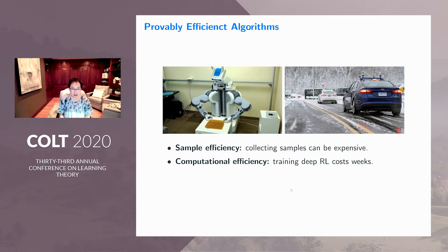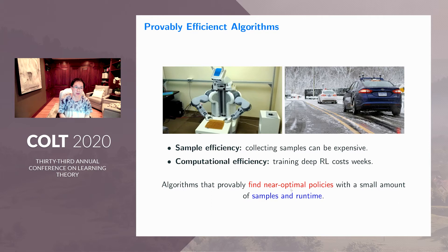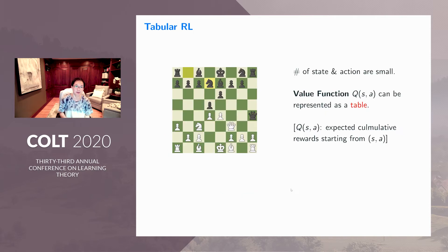The second is computational efficiency. We typically know when training reinforcement learning models, we usually use deep neural networks. Training even small tasks usually costs weeks. So we also want our algorithm to be computationally efficient. We say an algorithm is provably efficient if it can provably find a near-optimal policy with a small number of samples and runtime. We want both sample efficiency and computational efficiency.